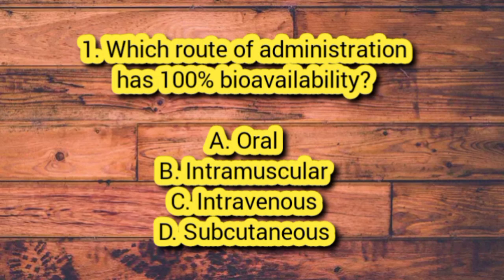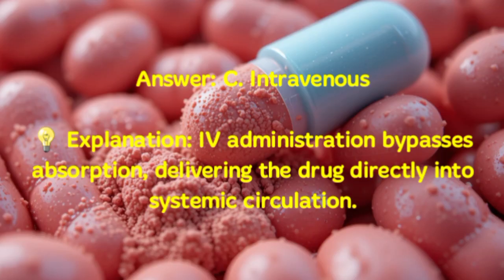Number 1. Which route of administration has 100% bioavailability? A. Oral. B. Intramuscular. C. Intravenous. D. Subcutaneous. Answer: C. Intravenous. Explanation: IV administration bypasses absorption, delivering the drug directly into systemic circulation.